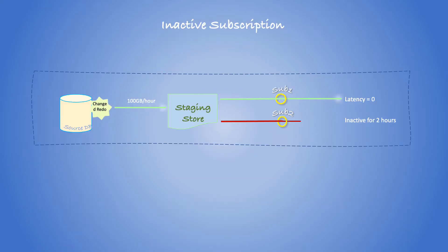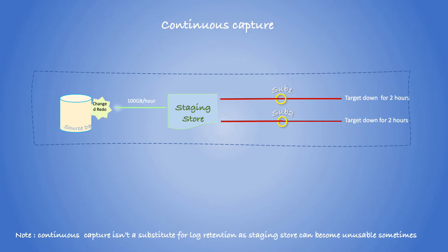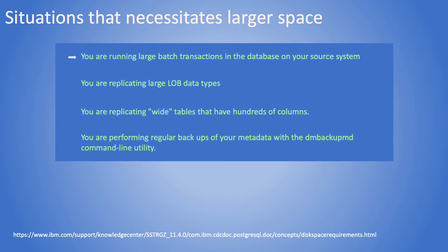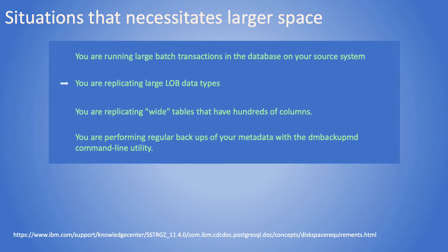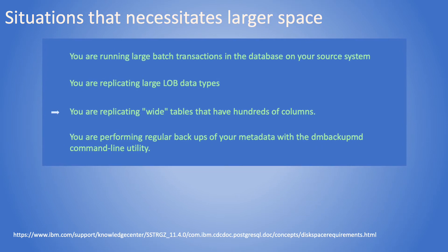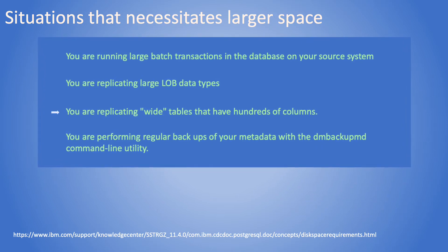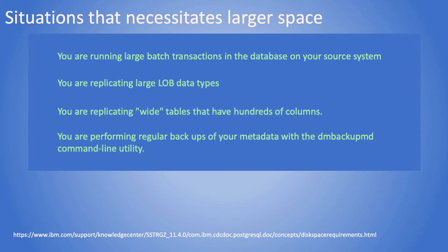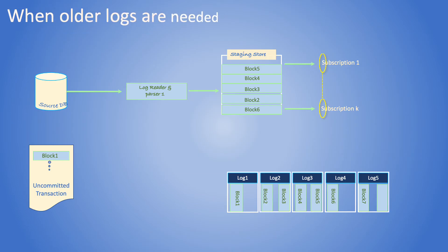Any table that is parked should be set to refresh to avoid staging store growth; it can be done through the management console. Continuous capture is a feature where CDC can keep reading change data even when the target is down. Large batch operations or LOBs can take up large space, as do wide tables. Staging store may move ahead of transactions that still hold older logs; these logs may still be needed by CDC on restart.